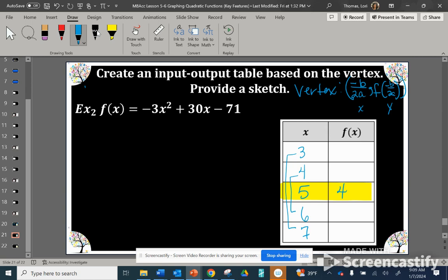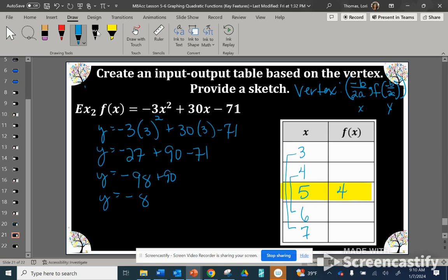I'm going to plug in 3, and whatever I get for 3 will also be the output for 7. Order of operations: square the 3 to get 9 times negative 3, plus 30 times 3 is 90, minus 71. Combining the negatives, that's negative 98, and our y value is negative 8. So when x is 3, y is negative 8, which corresponds to x equals 7. They're equally distant from our axis of symmetry, x equals 5.